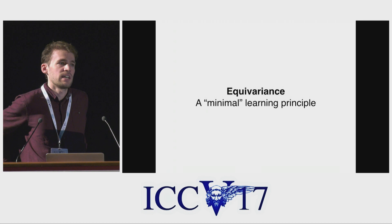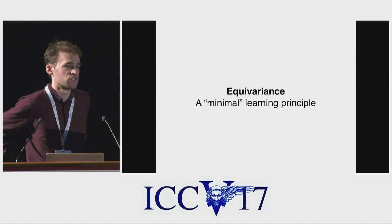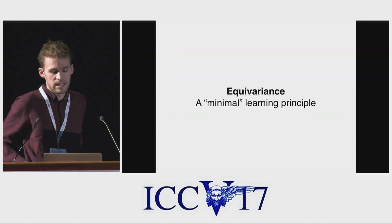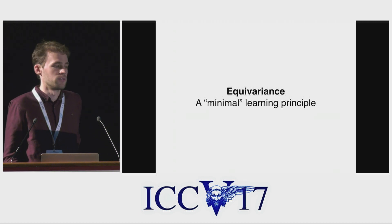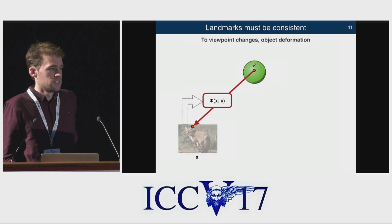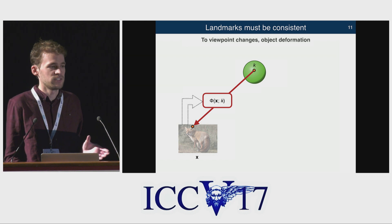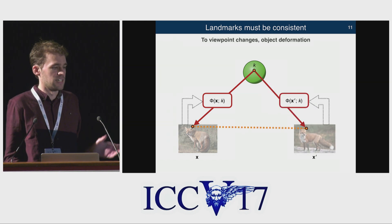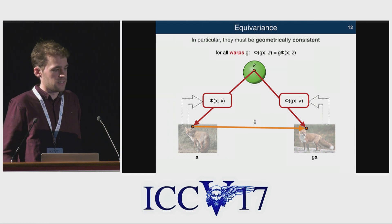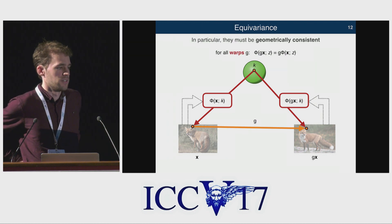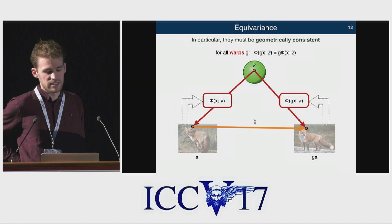What we wanted is a minimal learning principle. You could find a lot of heuristics to describe what a landmark is, but we wanted something very simple. What we ended up using is the equivariance principle — essentially the minimal properties we'd expect of a landmark. Equivariance is a simple notion: if the object in the image changes, moves, or the camera moves, then the landmark should move in a consistent way with that. If we had ground truth for that — for example, optical flow — we could use the equivariance principle: the prediction on the warped image should be the same as the warp of the prediction.